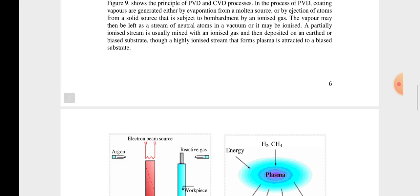Coating vapors are generated either by evaporation from a molten source, or by ejection of atoms from a solid source that is subjected to bombardment by an ionized gas. The vapor may then be left as a stream of neutral atoms in a vacuum, or it may be ionized through a highly ionized stream that forms a plasma which is attracted to the biased substrate.